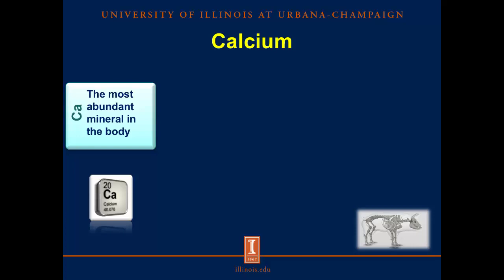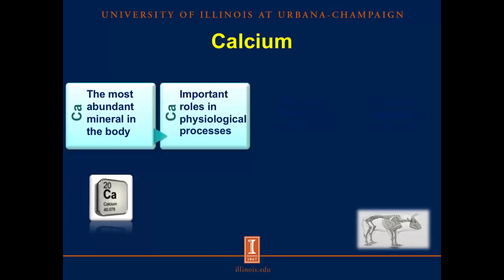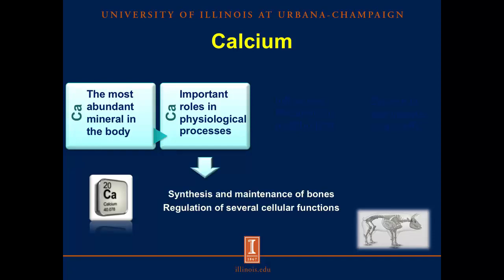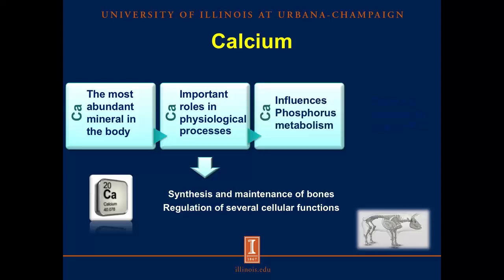Let's start with a brief introduction. Calcium is the most abundant mineral in the body. It has important roles in physiological processes such as synthesis and maintenance of bones and regulation of several cellular functions. Calcium is closely related to phosphorus and therefore it influences phosphorus metabolism.